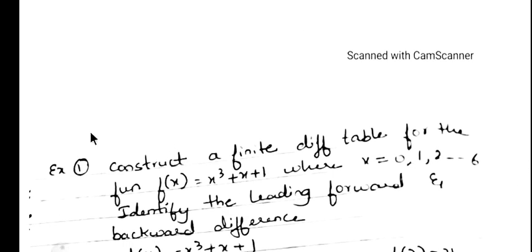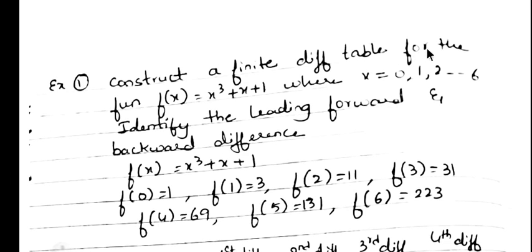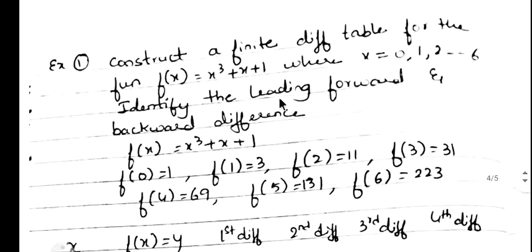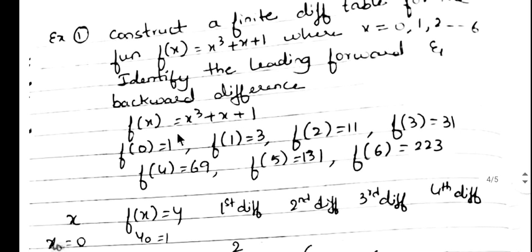Now we will solve one example. Construct a finite difference table for the function f(x) = x³ + x + 1, where x ranges from 0 to 6, and identify the leading forward and backward differences. Substituting x = 0: f(0) = 1. x = 1: f(1) = 3. x = 2: 2³ + 2 + 1 = 8 + 2 + 1 = 11. Similarly, substitute 3, 4, 5, and 6 to get the remaining y values.